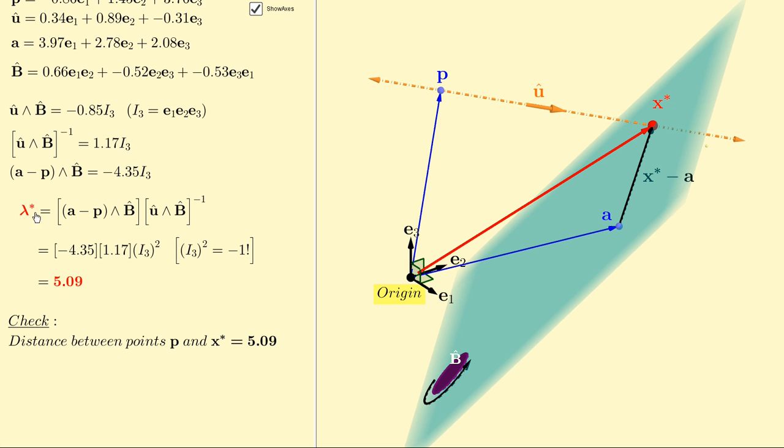To find lambda star, lambda star is the outer product of a minus p wedged with b hat times this multiplicative inverse. a minus p wedged with b hat is negative 4.35 i3.